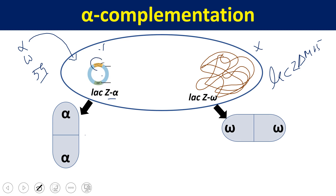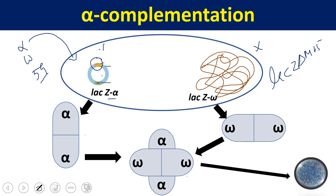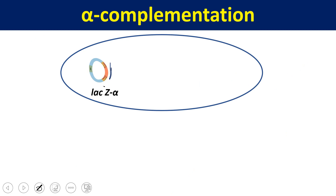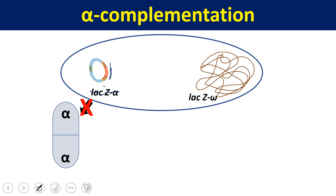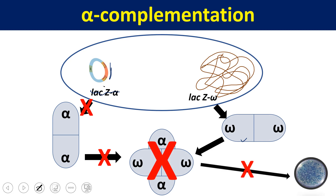If the lac-Z gene on the plasmid is intact (no insertion), alpha is produced. Alpha and omega combine to form functional beta-galactosidase, which metabolizes X-gal and gives a blue colony. However, when we have a transformed plasmid — meaning a gene of interest has been inserted — the lac-Z gene is fragmentally inactivated by insertional inactivation, so no alpha is produced. The main chromosome still produces omega, but without alpha, the enzyme is non-functional, X-gal is not metabolized, and we get a white colony.